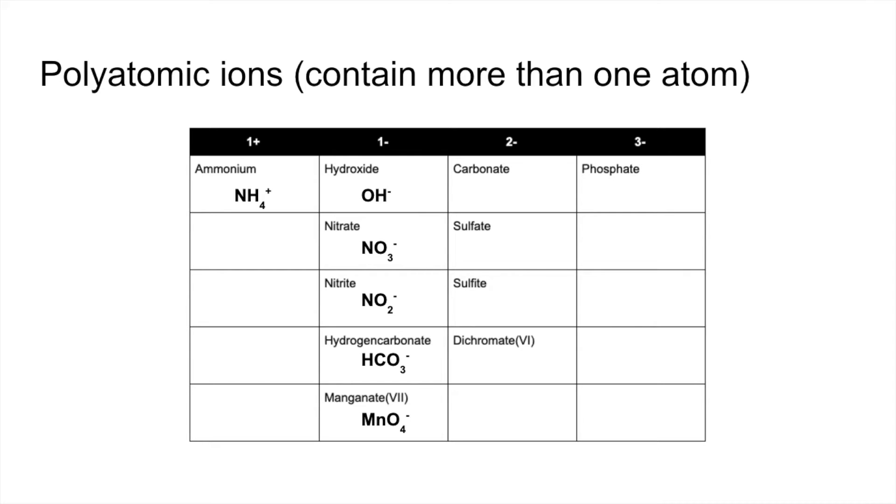So moving on to the 2 minus ions now. Carbonate is CO3, 2 minus. Sulfate is SO4, 2 minus. Sulfite is SO3, 2 minus. And another more year 13 ion is the dichromate 6 ion. That's a Roman 6, VI, is Cr2O7, 2 minus.